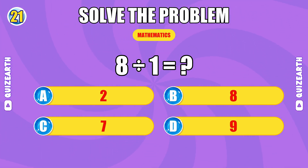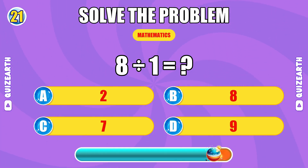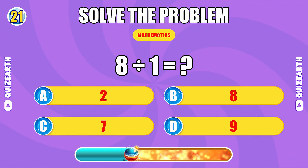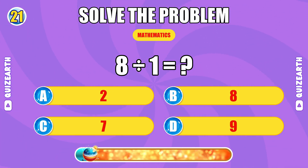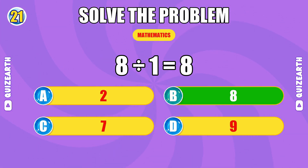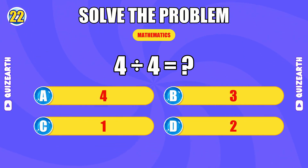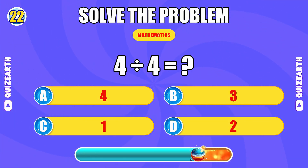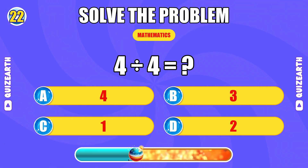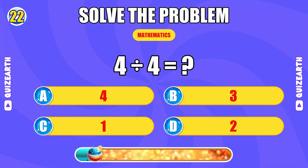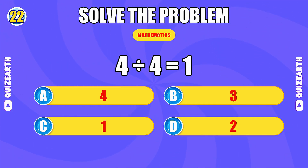What do you get when you divide eight by one? Flawless — the answer is eight. What is four divided by four? You're dominating — the answer is one.